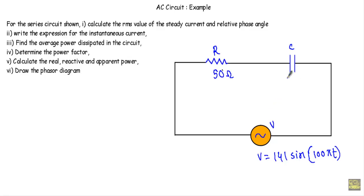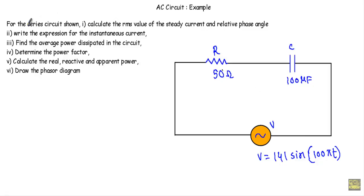In this video I will show you an RC series circuit. We have a resistor of 50 ohm which is in series with a capacitor whose capacitance is 100 microfarad, and we are applying an alternating voltage V equal to 141 sine 105T in this RC series circuit.